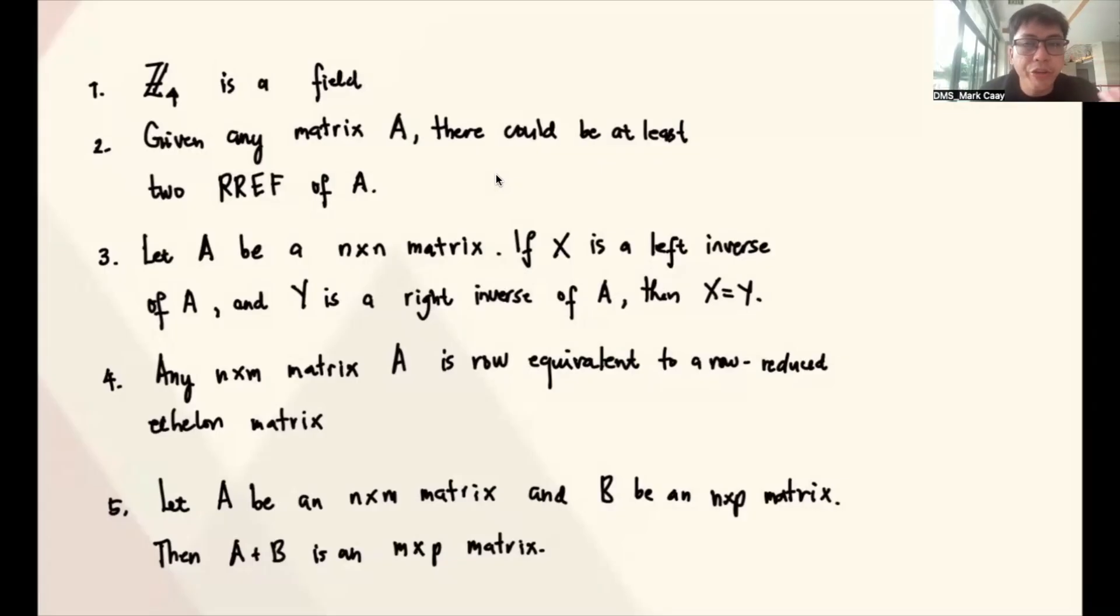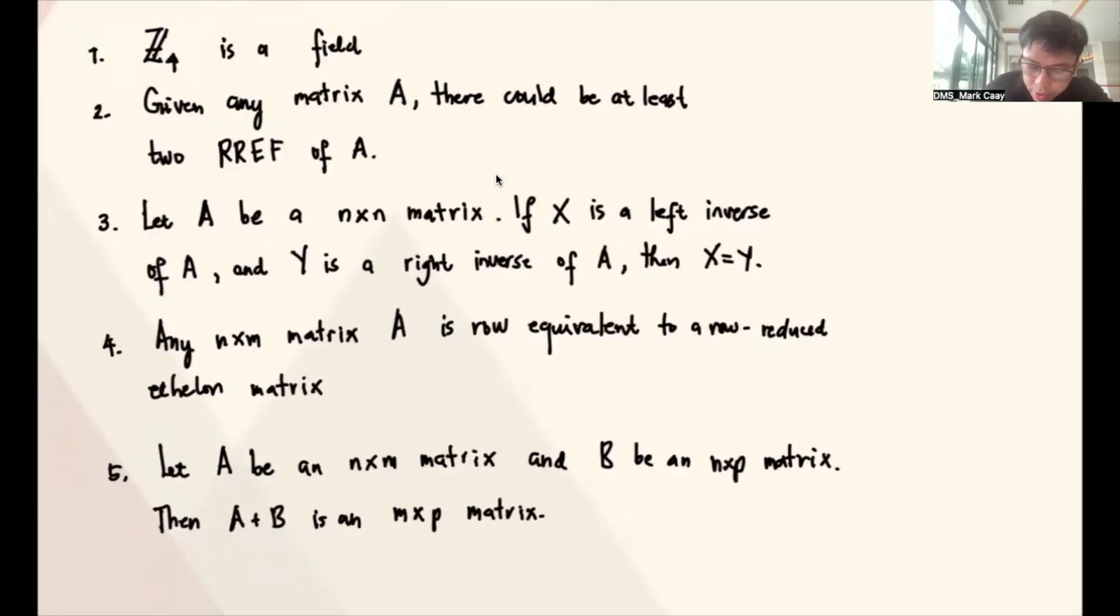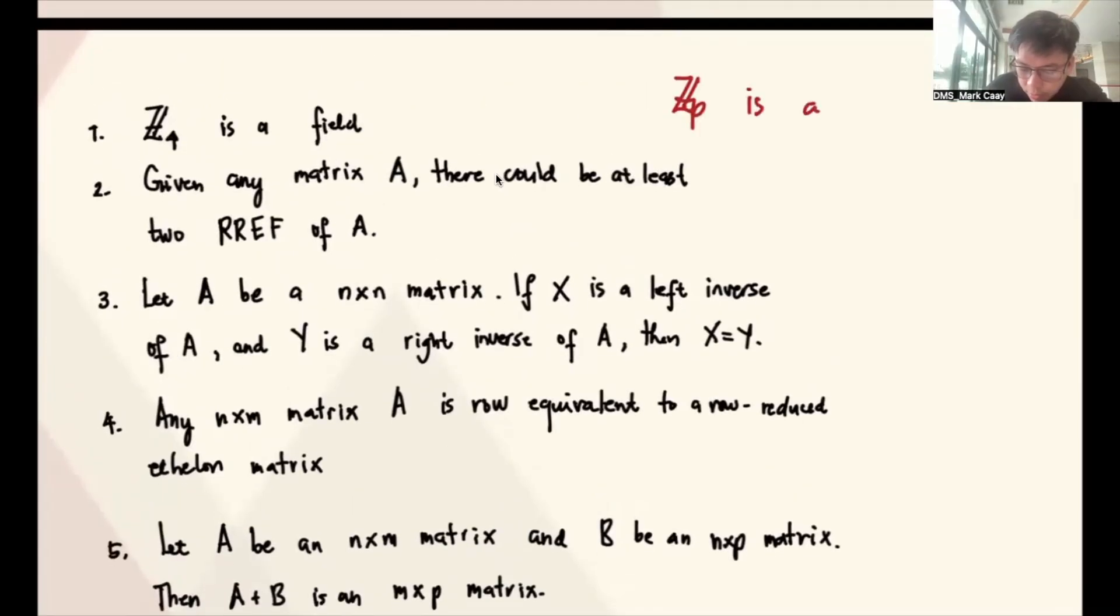Okay, so this is a true or false question, but we have to validate why it's true or why it's false. So number one, Z4 is a field. Now, we have a result in linear algebra already that ZP is a field if P is prime. In this case, 4 is not prime, so therefore this is not a field. This is false.